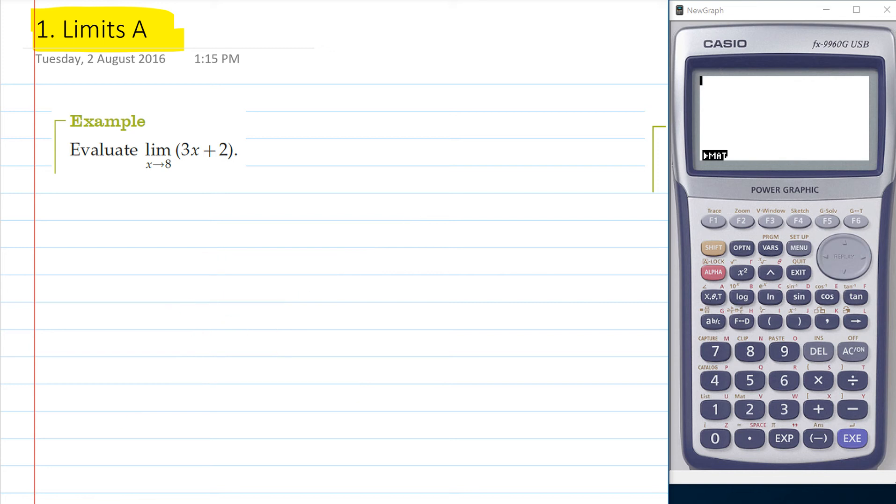With this first example here it's very straightforward because it's just a matter of substituting in 8 for x. So we have 3 times 8 plus 2 which gives us 26. So if you're able to directly evaluate a limit you do that. That's the easiest way to do it.